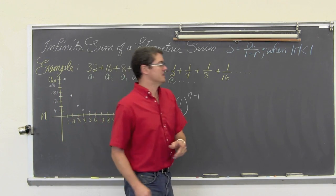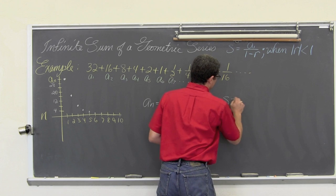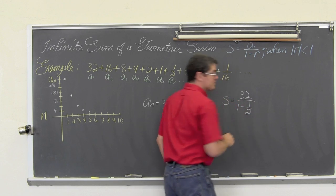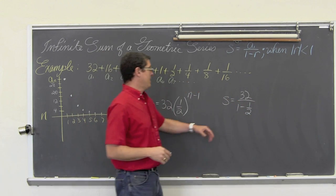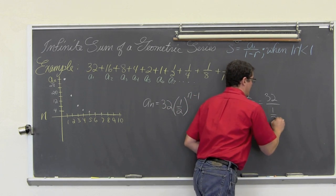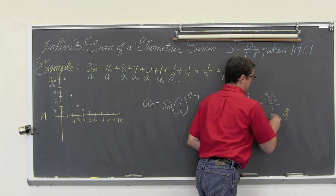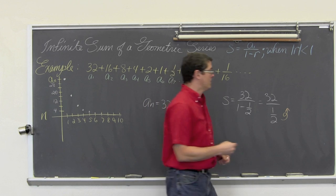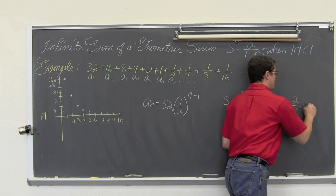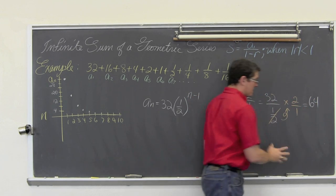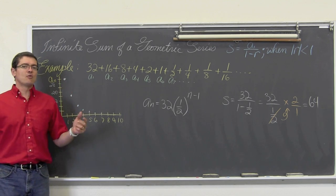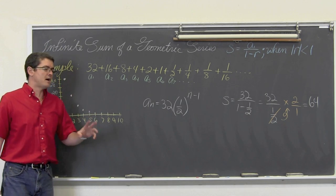Let's see what that infinite sum is. S is equal to a sub 1 which is 32 over 1 minus r which is going to be one half. We have 32 over 1 minus one half which is one half. We are going to flip that denominator up and make that division of one half appear as a multiplication of two over one. So my infinite sum is going to be 64. Pretty simple process, but again it is such a simple formula. I kind of want to at least to some degree explain why that is occurring.